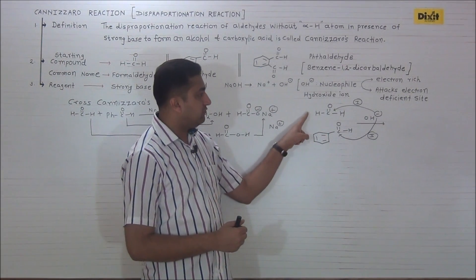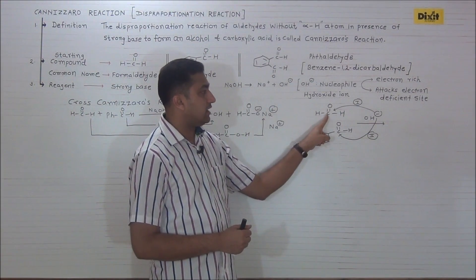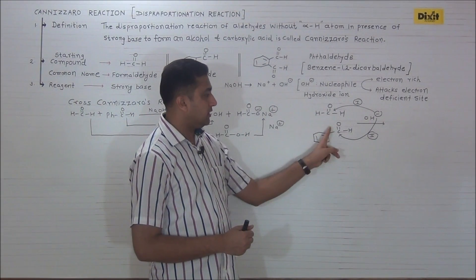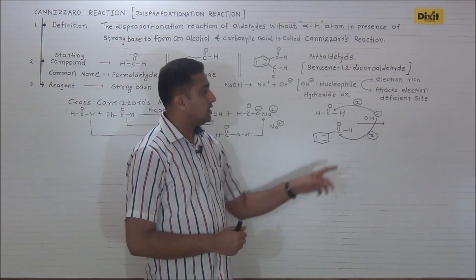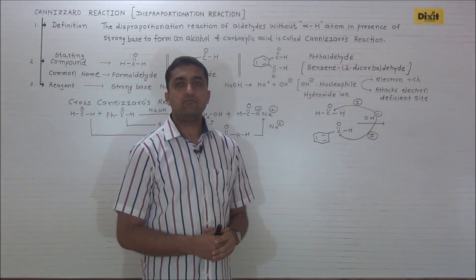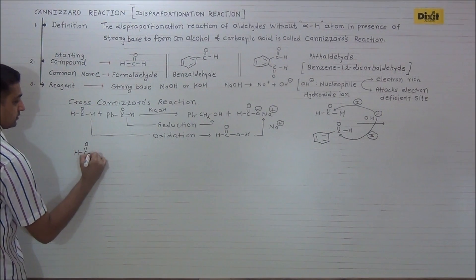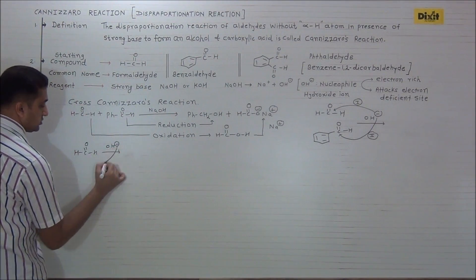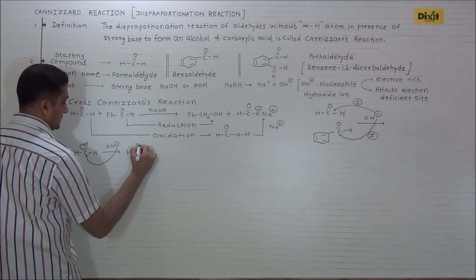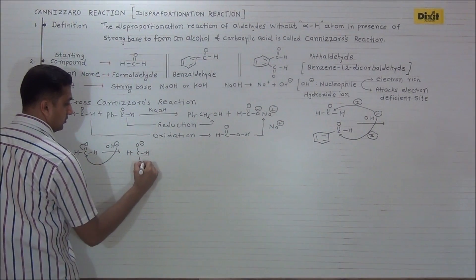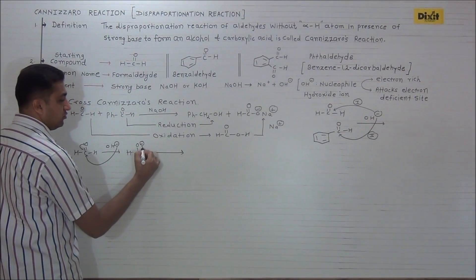In the reaction mixture when formaldehyde and benzaldehyde are both present, nucleophile OH⁻ has a choice to attack either the carbonyl carbon of formaldehyde or benzaldehyde. As the carbonyl carbon of formaldehyde suffers from less steric hindrance, OH⁻ attacks the carbonyl carbon of formaldehyde. Nucleophile OH⁻ attacks on carbonyl carbon, pi bond breaks on oxygen forming H-C(O⁻)-OH.